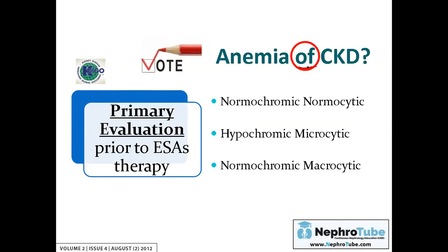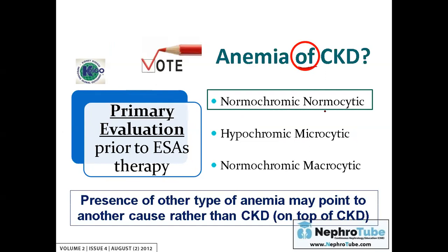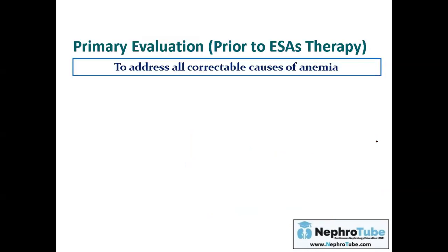Anemia of chronic kidney disease, like any chronic disease, must be normocytic normochromic anemia. The presence of other types — such as hypochromic microcytic — may indicate another cause on top of CKD, most commonly iron deficiency anemia. Therefore, before giving erythropoietin stimulating agents, we must address any correctable, reversible cause of anemia and treat it first. Giving ESA therapy in a patient with another cause of anemia will provide no benefit.